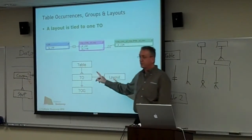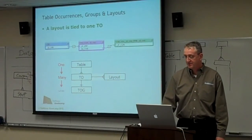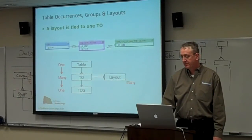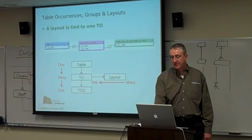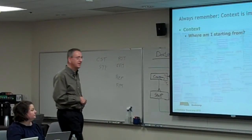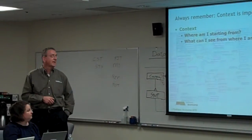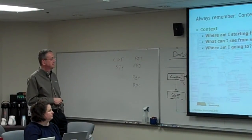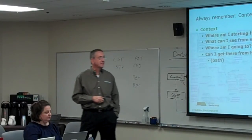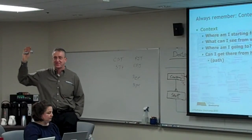Each layout is tied to one table occurrence — not a table. One table has many table occurrences, and each table occurrence has one table occurrence group, and there may be many layouts tied to one table occurrence. The whole idea of context in the relational graph is: where am I? What can I see from where I'm at? Where am I going, and what's the path? When it gets as tangled as that, many developers have resorted to charting it out on paper.